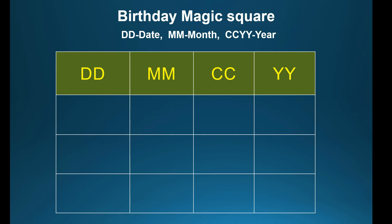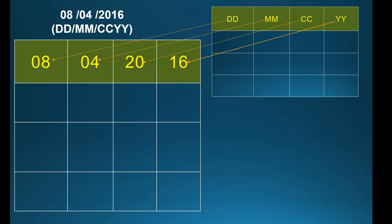For creating the birthday magic square, in the first row: the first column you write DD (date), the second column month, the third and fourth columns the year (CC and YY). I took the example of my son's birth date: 8th April 2016. So date is 8, month is 4, CC is 20, and YY is 16.